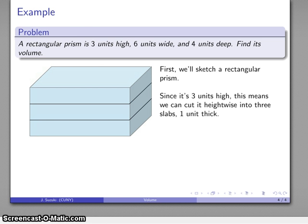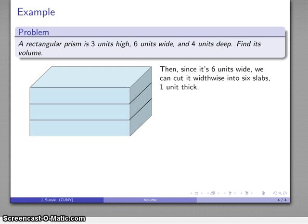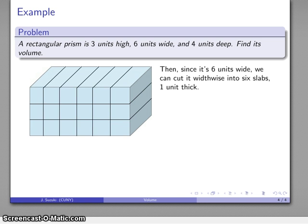And we know that this prism is three units high, so I know that I can cut it into one, two, three slabs. Each of these is one unit thick. So here's our one, two, three units of height.